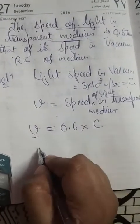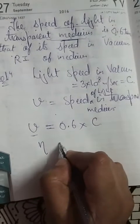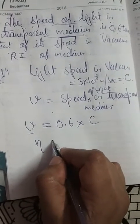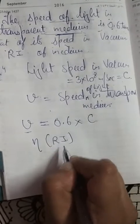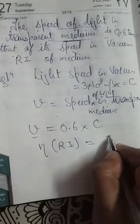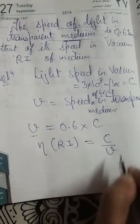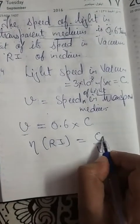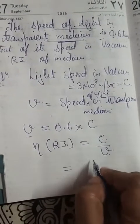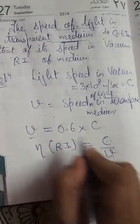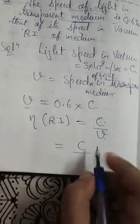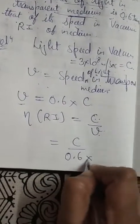Now, the refractive index is denoted by n or eta, and it equals c divided by v — speed of light in vacuum divided by speed of light in the medium. So what is c? It is 3 × 10⁸ m/s. And v? We substitute v = 0.6c from our earlier expression.